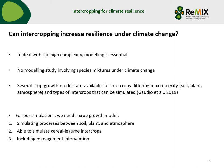These models differ in their complexity — for example, whether they include soil, plant and atmosphere or only parts of this — and they also differ in the types of intercrops that can be simulated. Some models are dedicated to strip intercrops and others can only simulate mixed crops or row intercrops. For our simulation we need a crop growth model that simulates processes between soil, plant and atmosphere, is able to simulate cereal-legume intercrops, and also allows simulation of management interventions such as different sowing dates or sowing ratios.